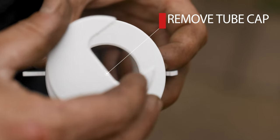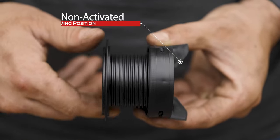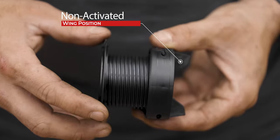Simply remove the cap, rotate the tube counterclockwise until the wings are rotated inside the collar to non-activated mode.